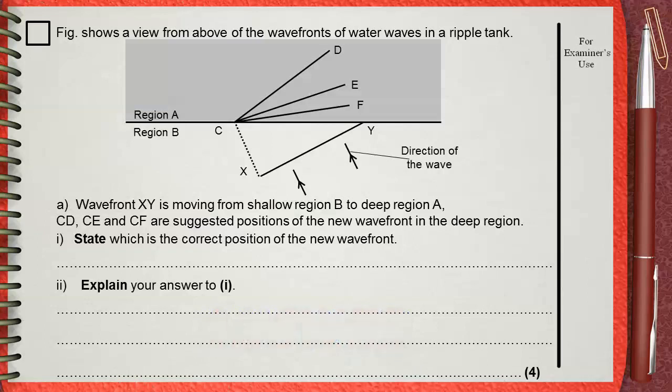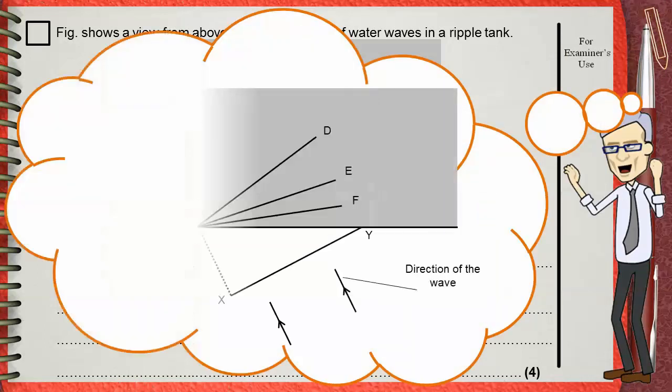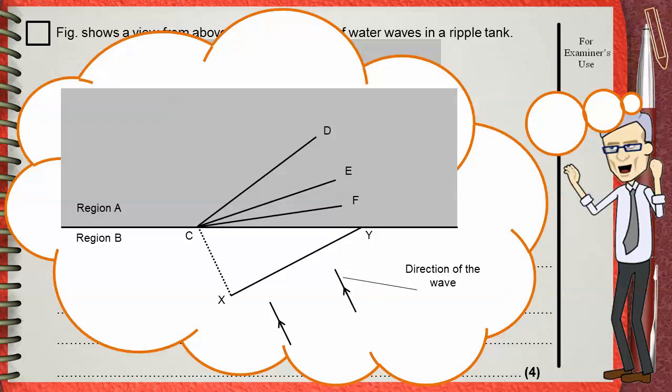Let's think about this question. XY is a wavefront currently in the shallow region B. It will then move to region A, which is deeper than region B. To answer this question, you must know that when a water wave moves from shallow to deep, its wavelength increases and its wave speed increases, so it can cover a longer distance in the same time in the deeper region.